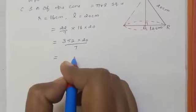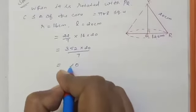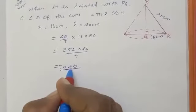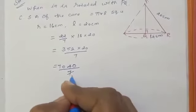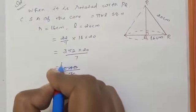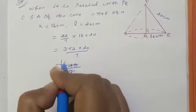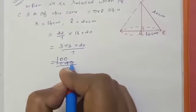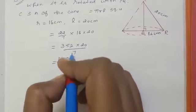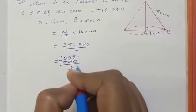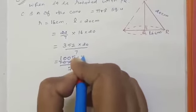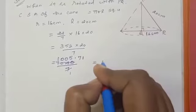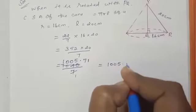352 into 20 we can multiply means 7040 divided by 7. 40 divided by 7 means 5 times remaining 5. Divide means 7 times remaining 1. So 10 one time. So we can write the answer 1005.71.